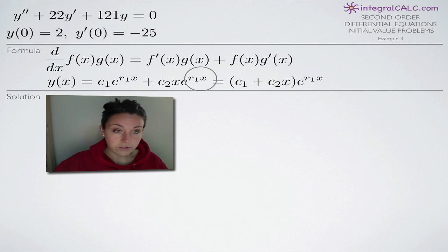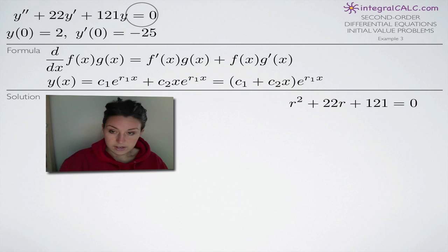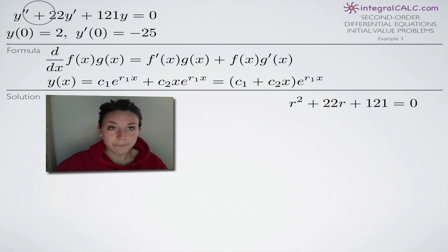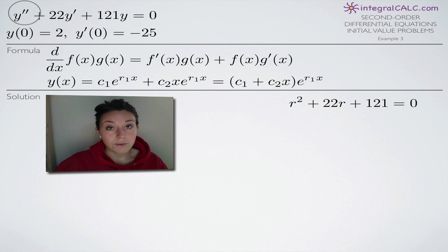The first thing we do in a problem like this is convert our original function to an equation involving the variable r instead of the variable y. The easiest way to do it is a simple trick where I count the hash marks on the y variables. This is y double prime — the second derivative of y — with two hash marks, so we replace it with r squared.